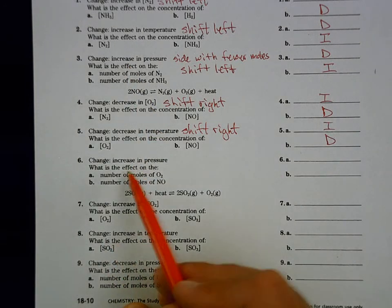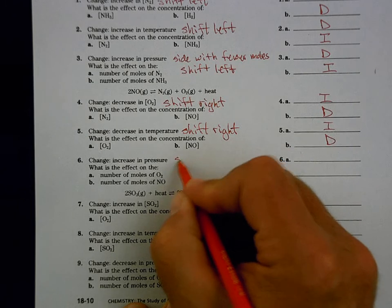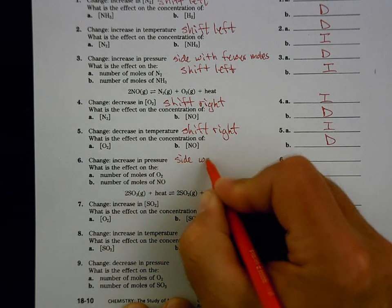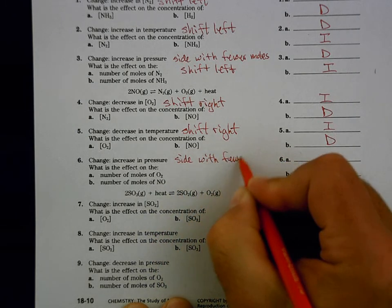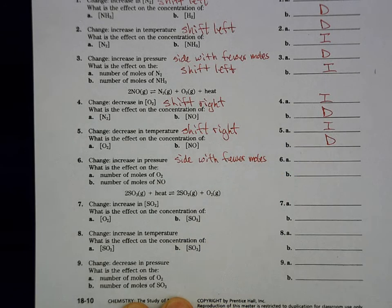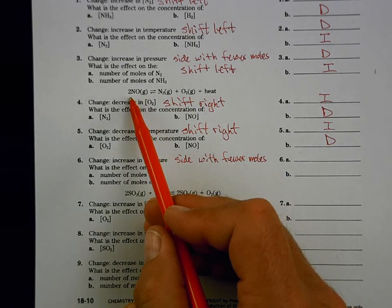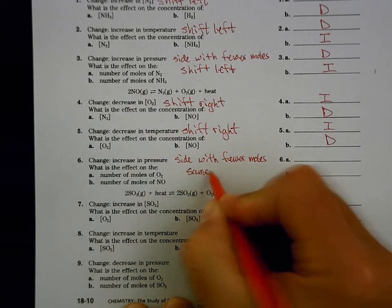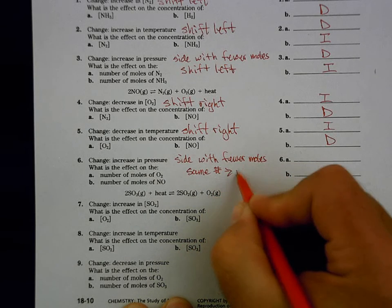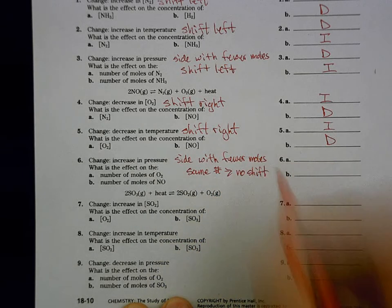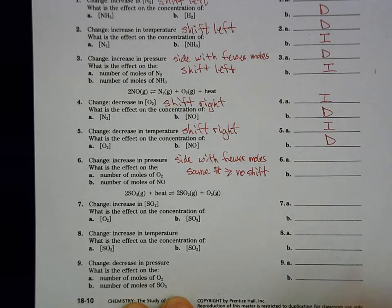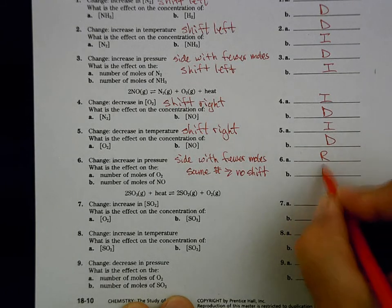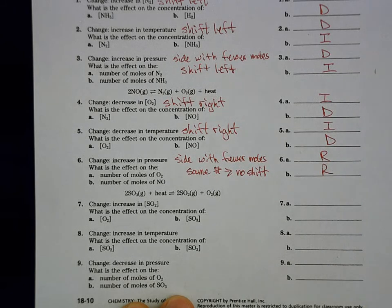Increase in pressure: we go to the side with fewer moles. But when we look, the left has two moles and the right has one plus one — also two moles. They're the same, so there is no shift. If there's no shift, there are no increases or decreases on either side.